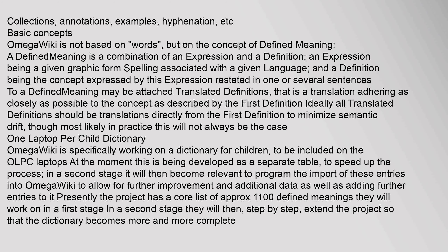Basic concepts: OmegaWiki is not based on words, but on the concept of defined meaning. A defined meaning is a combination of an expression and a definition — an expression being a given graphic form or spelling associated with a given language, and a definition being the concept expressed by this expression restated in one or several sentences. To a defined meaning may be attached translated definitions, that is a translation adhering as closely as possible to the concept as described by the first definition. Ideally all translated definitions should be translations directly from the first definition to minimize semantic drift.